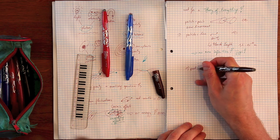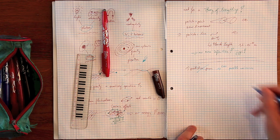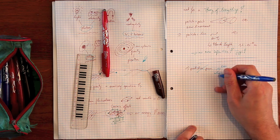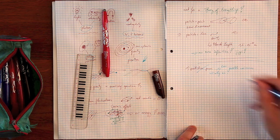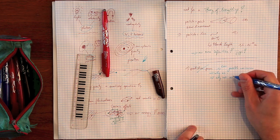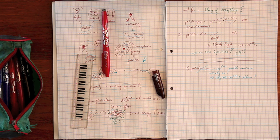First, string theory misses all predictive power. It predicts 10 to the 500 possible universes, all totally different, of which only one is ours. Why is reality, how we know it, exactly this one, and not one of the 10 to the 500 minus 1 others. It is a huge shortcoming for a theory when it is not able to give an unambiguous prediction.